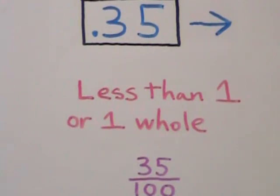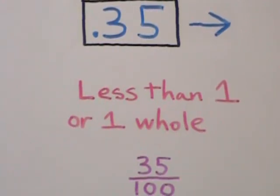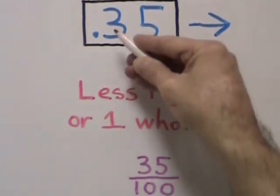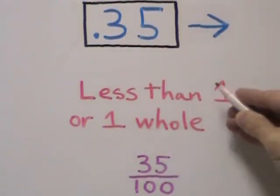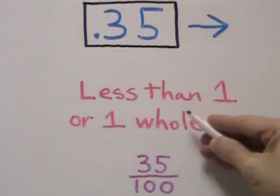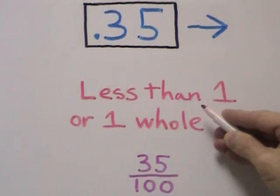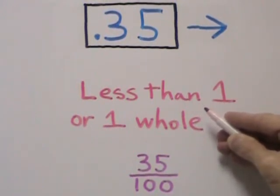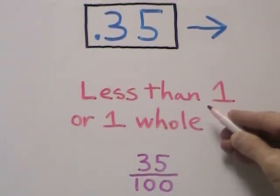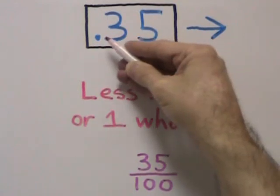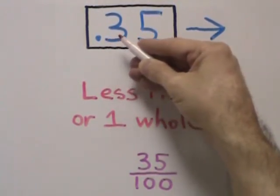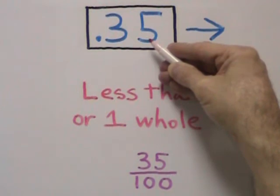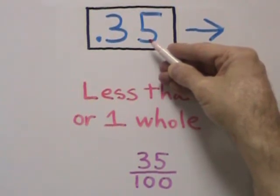Decimals represent parts of numbers. On the board, we have the decimal .35. Its value is less than one or one whole. We can tell that it's less than one or one whole because we have the decimal followed by two digits, which represent hundredths.